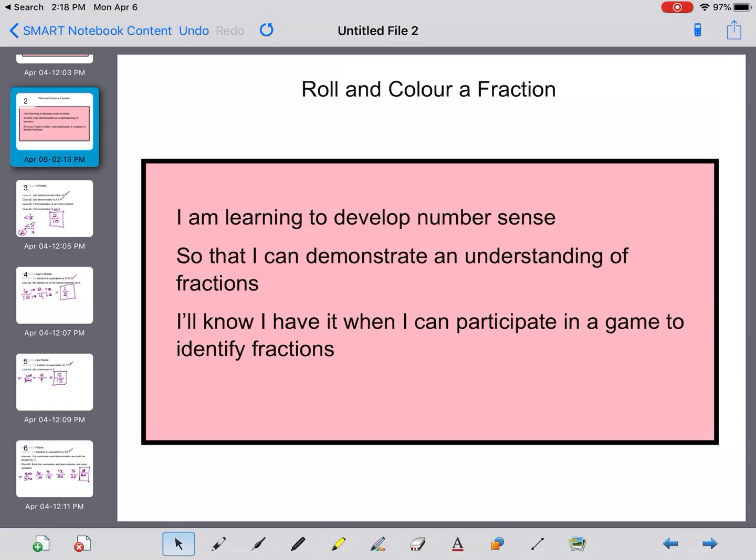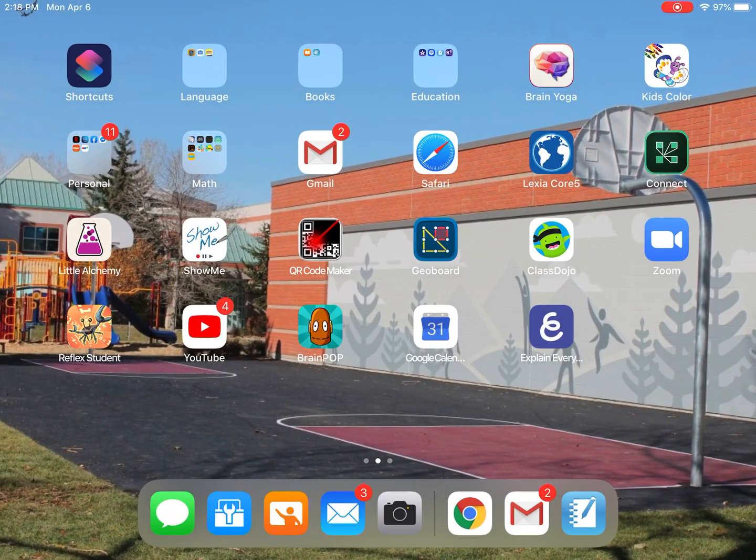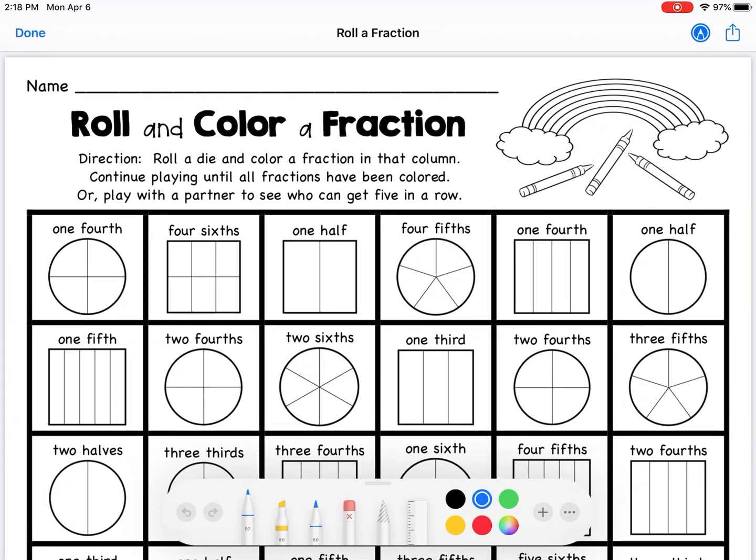So on your Google classroom if you go into the attachment it will look something like this, and there's two ways that you can do this. The directions are right on the top. It says you can roll a die, a six-sided die, and color a fraction in that column. Then you continue playing until they're all colored in, or you can even play with a partner to see who can get five in a row.